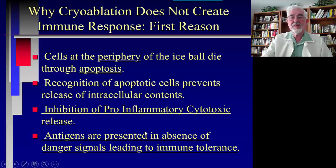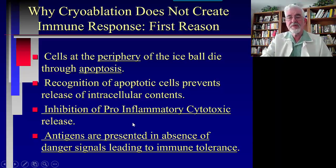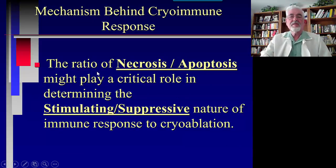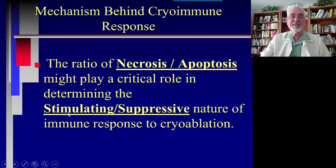You must have the inflammation in order to prime the cryo as an immune booster, as an immune therapy. The ratio of necrosis to apoptosis might play a critical role in determining whether we get stimulation or suppression of the immune response to cryoablation.